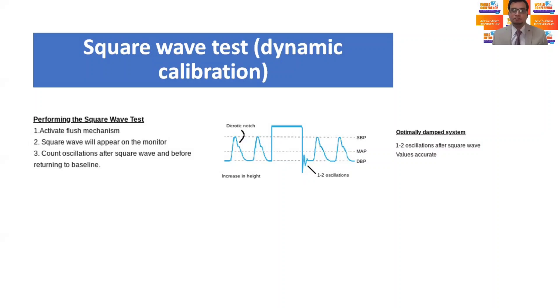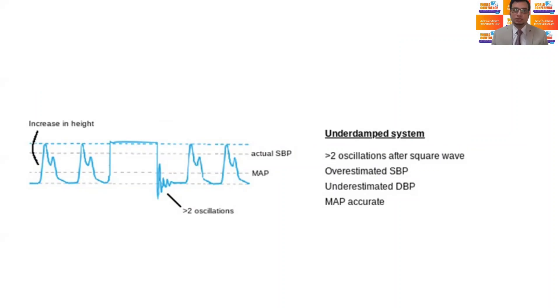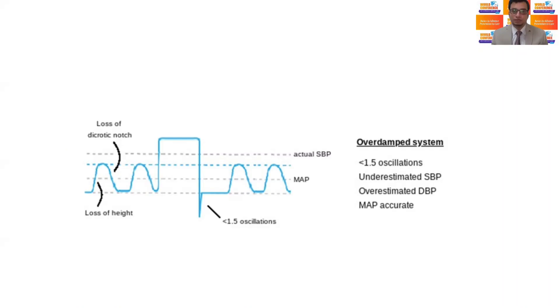If the system is optimally damped, there will be only one or two oscillations before it extends to the tracing of baseline tracing. If the system is under-damped, more than two oscillations will be seen. If the system is over-damped, less than 1.5 oscillations will be seen.